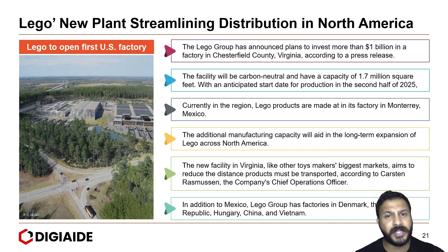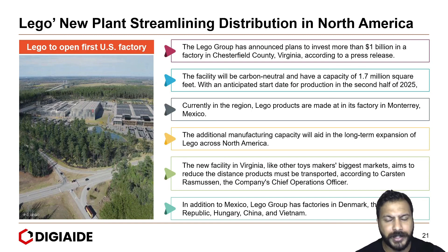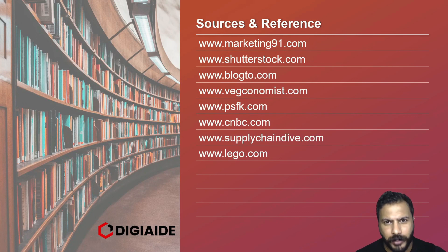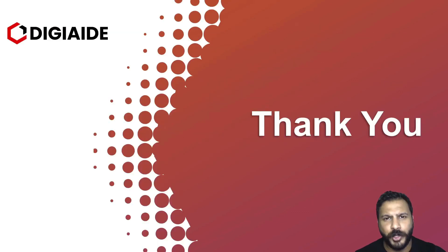So that's it, folks. This brings an end to the topic of understanding the dynamics of distribution — that is, a strategy for place. These are the list of sources and links referred to for our content in the video. Thank you and stay tuned for more videos. Thanks for listening. Bye.